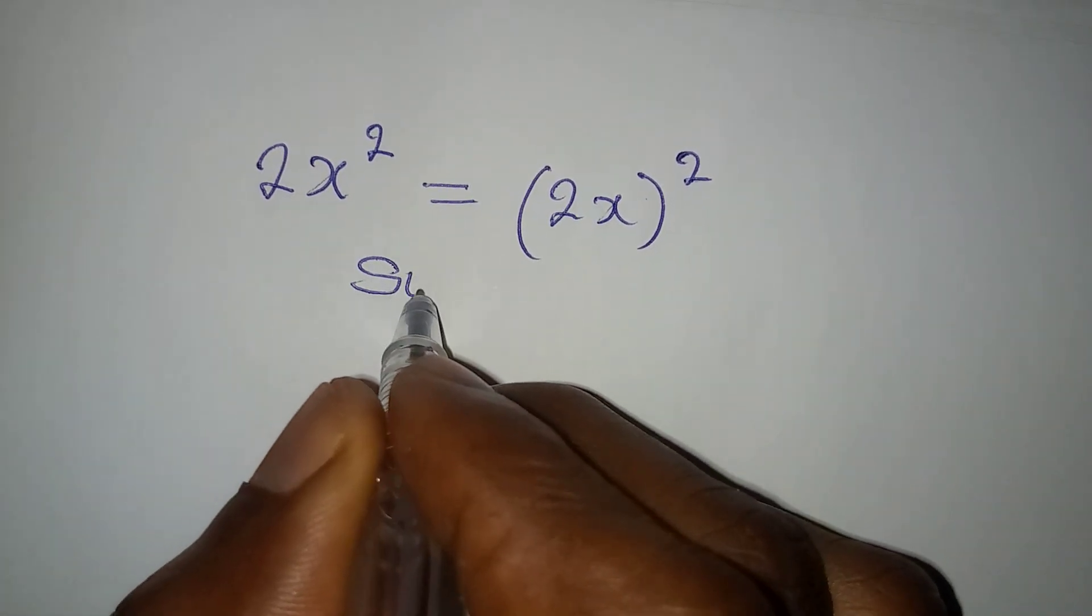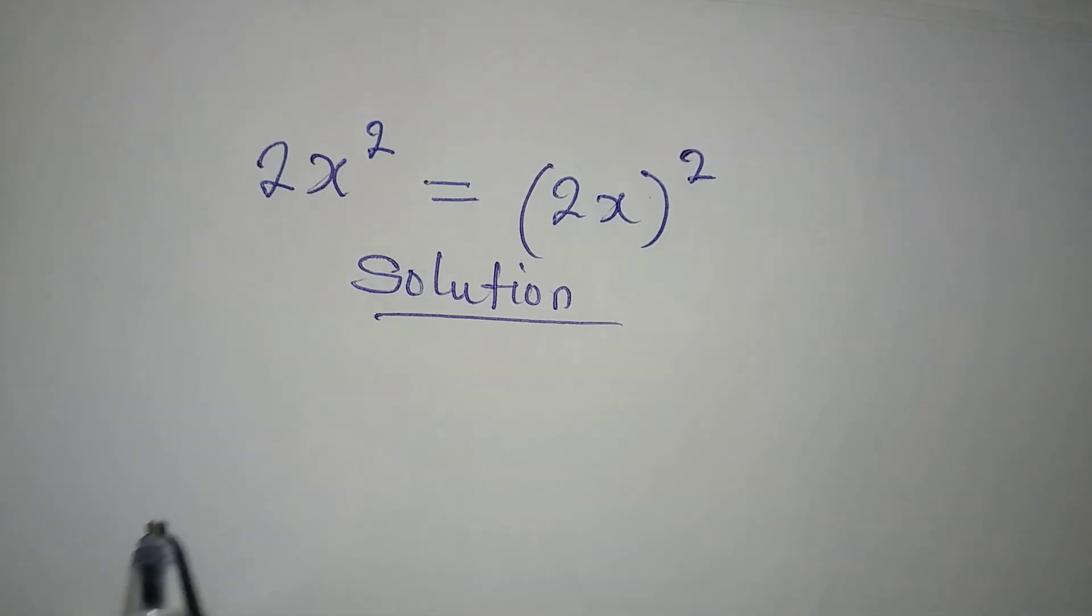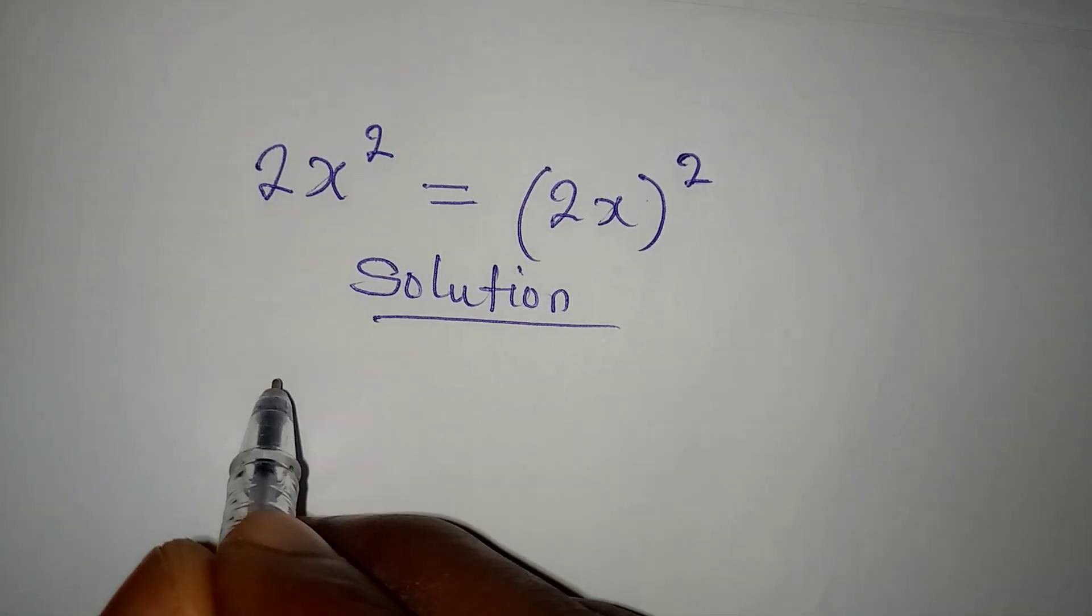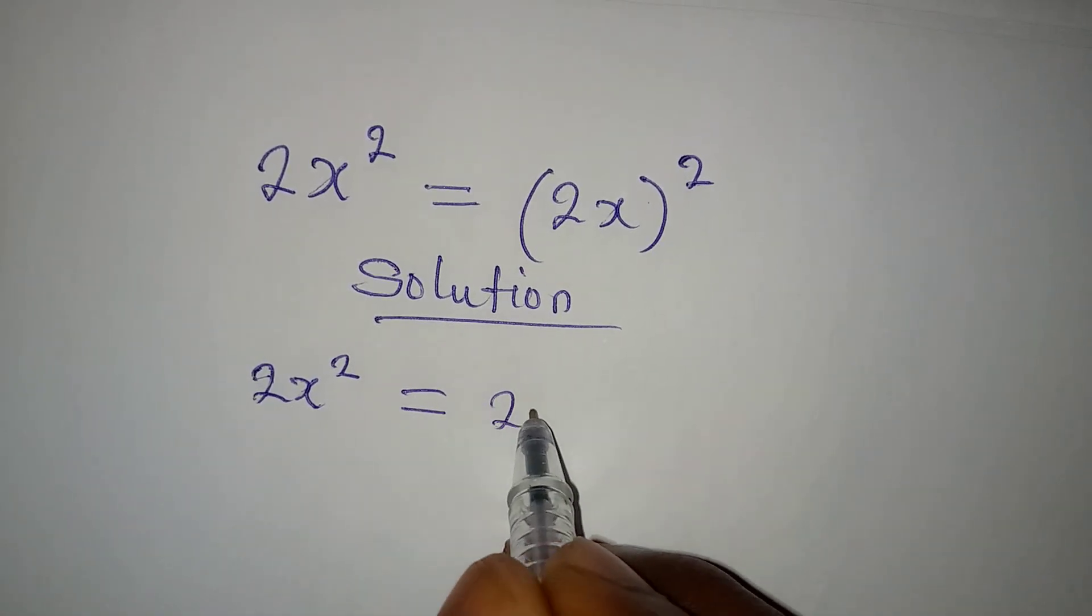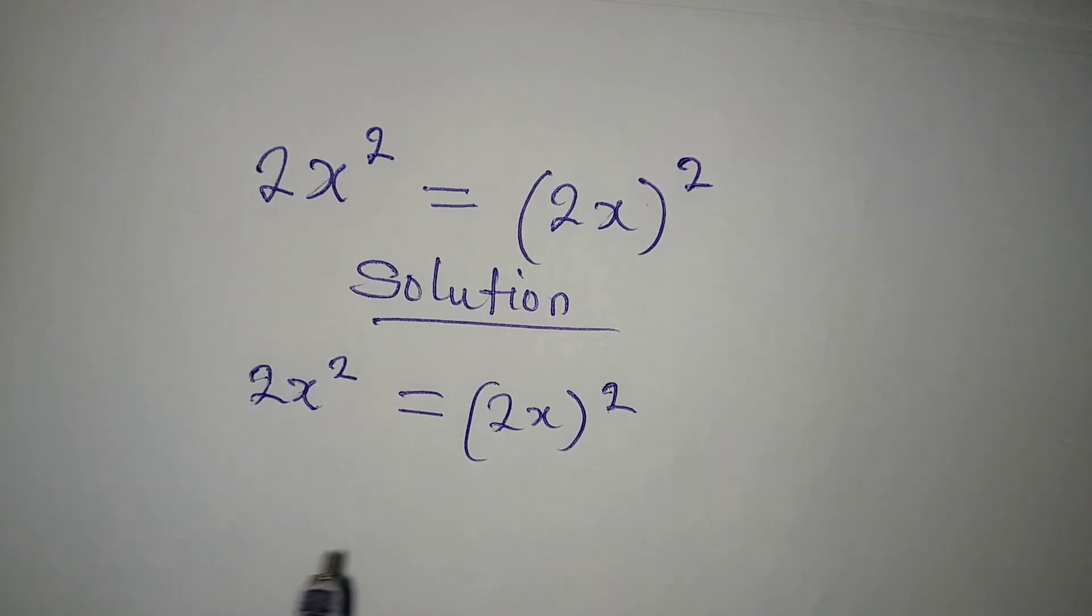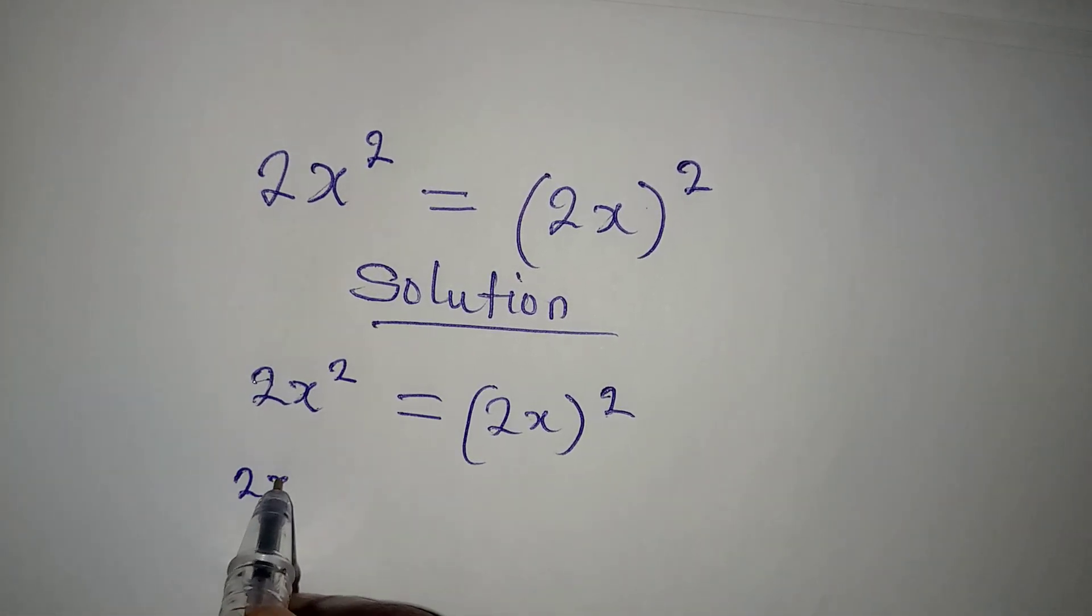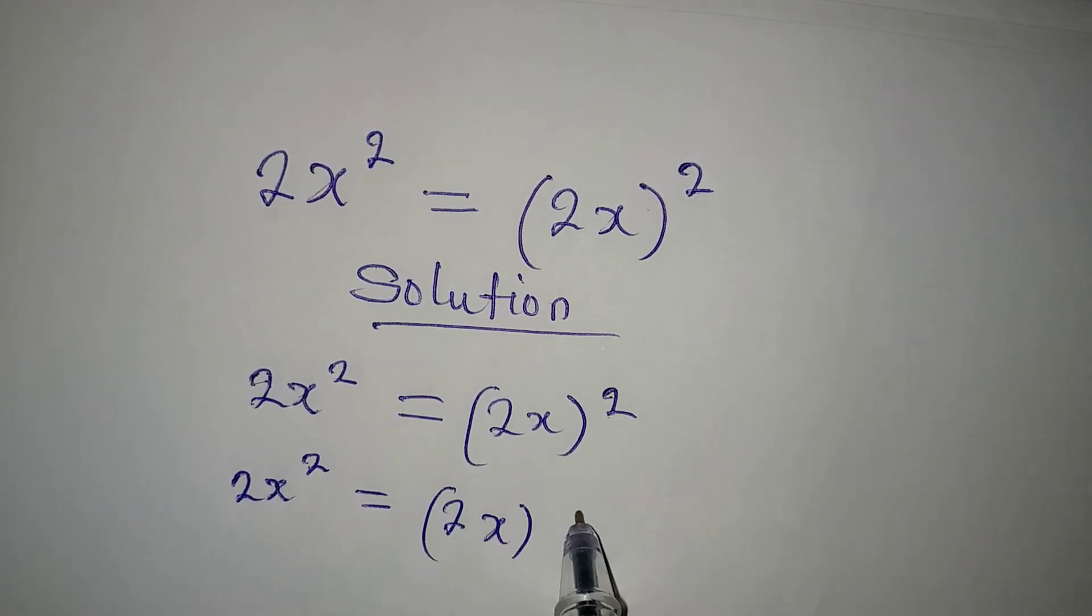Hello everyone, let's provide a solution to this very quickly. 2x² = (2x)². Because of the brackets, these are not the same thing. 2x squared here is different from (2x)², which means 2x in two places.